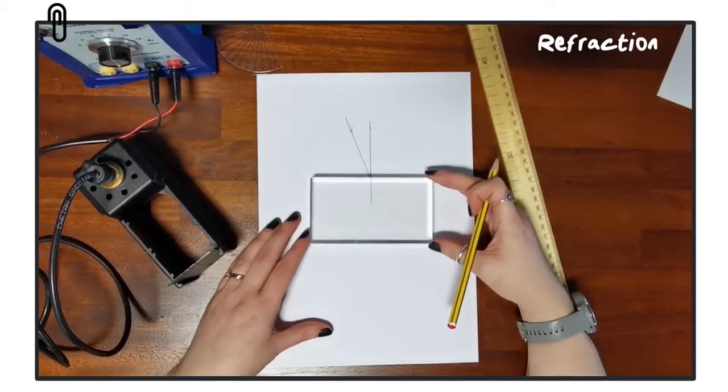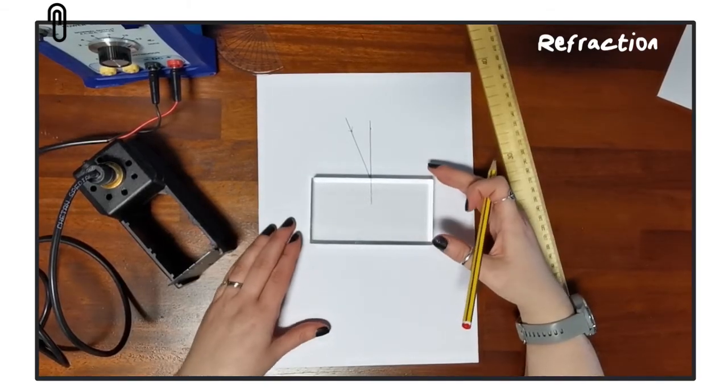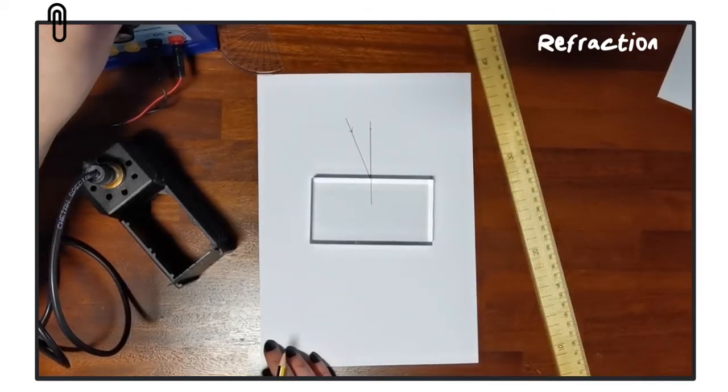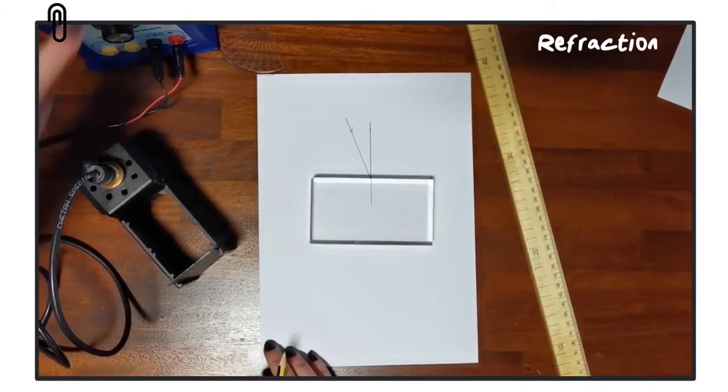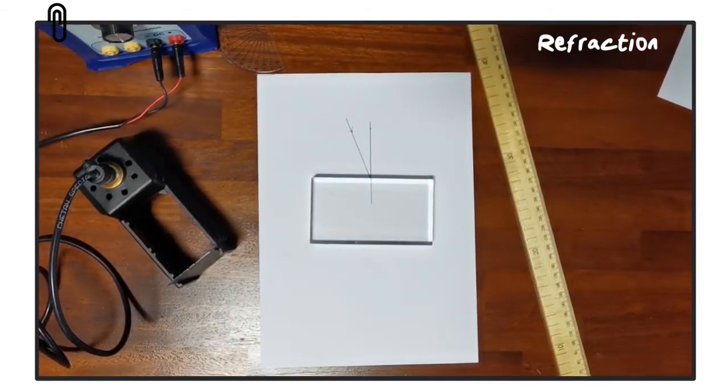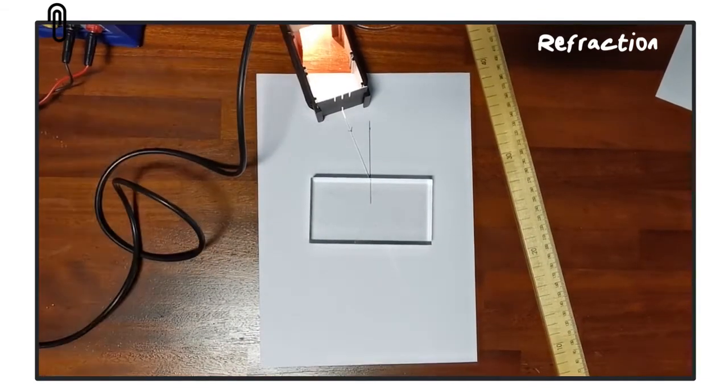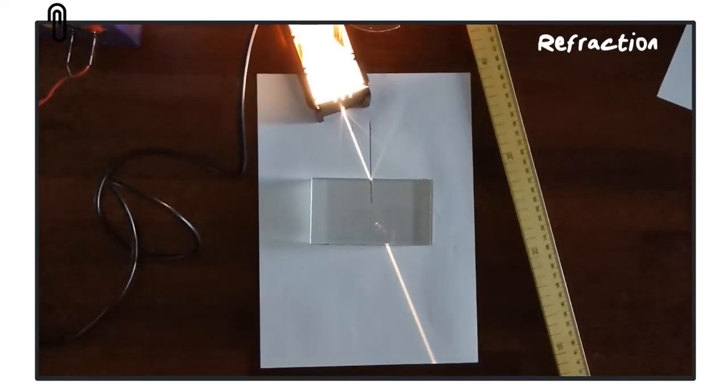Next, we replace the block, and then we take our ray box, turn it on, and line up that incident ray of light with the incident ray that we've drawn on our diagram. It is important that you turn off the lights to make the ray of light more visible.